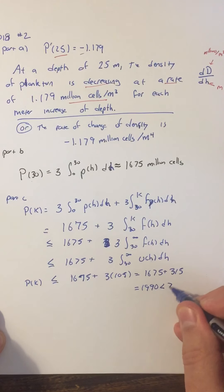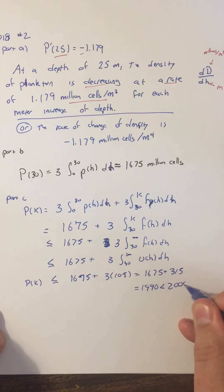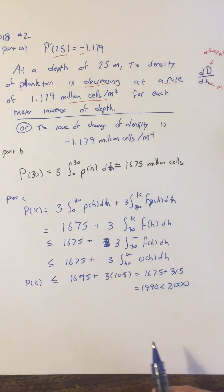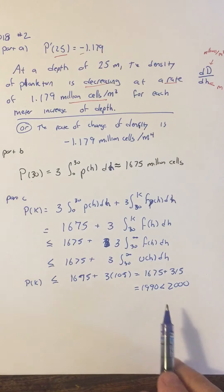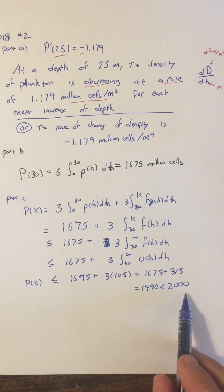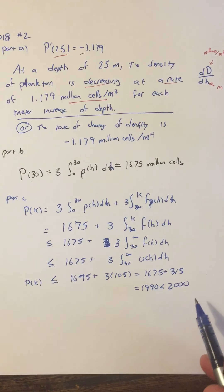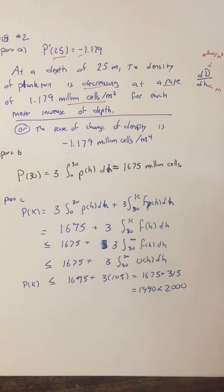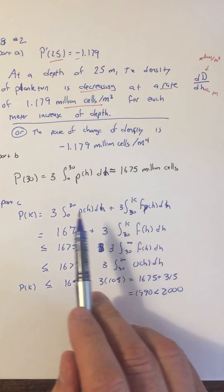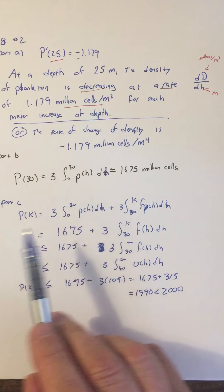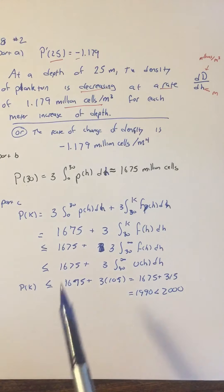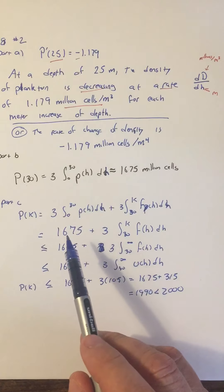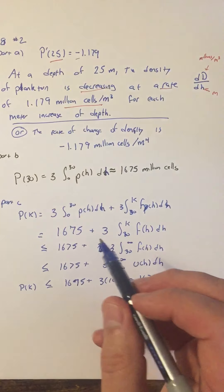1990 is less than 2000, therefore p of k is less than 2000 million cells. The key idea is to break up the integral from 30 to k and apply the given bounds.